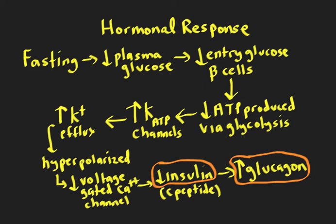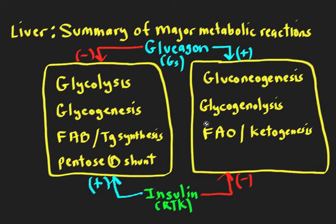If we look at the general reactions in the liver, elevated glucagon stimulates gluconeogenesis, glycogen breakdown, fatty acid oxidation, and ketogenesis, and it inhibits glycolysis, glycogenesis, fatty acid synthesis, triglyceride synthesis, and the pentose phosphate shunt. With glucagon being high, all the reactions on the right are turned up and all the reactions on the left are turned down. Because insulin is low — and insulin normally inhibits the reactions on the right — that also helps increase those reactions and inhibit the ones on the left. The combination of high glucagon and low insulin produces these effects.